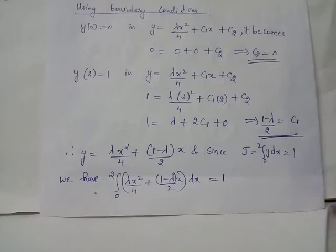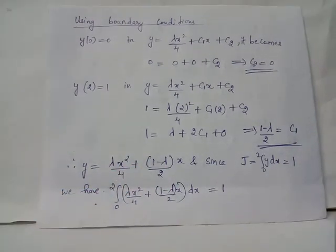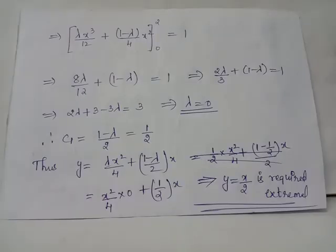Using the constraint J = ∫₀² y dx = 1, we substitute the expression for y and integrate. After applying the limits, we get 2λ + 3 − 3λ = 3, from which λ = 0. Therefore c₁ = 1 − λ/2 = 1/2.